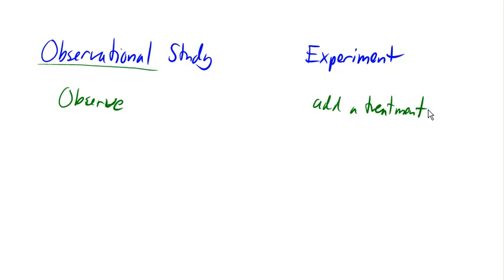So a treatment could be having people take a pill, or trying out a new paint on a wall. Any of these things could be treatments, and then you observe the result of that treatment.